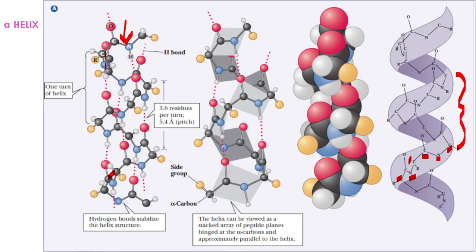For every turn of the helix, there are 3.6 residues — 3.6 amino acids. One turn is equal to 360 degrees, and in that 360-degree turn there are 3.6 residues. Can you find out what is the angle between any two nearby amino acids? At 360 degrees there are 3.6 residues — between any two amino acids, the answer must be 100 degrees.